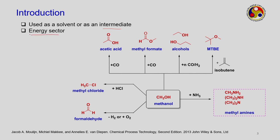Methanol is primarily used in the energy sector. As a main product, if you add ammonia to it you get methyl amines — dimethyl amine and trimethyl amine. If you do an oxidation or reduction reaction it forms formaldehyde. If you react it with hydrochloric acid you form methyl chloride, which is a precursor to several other chemicals.